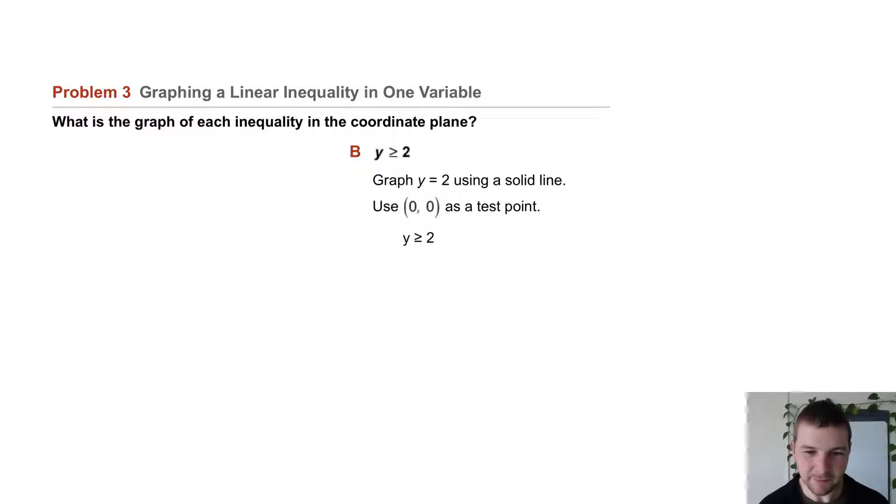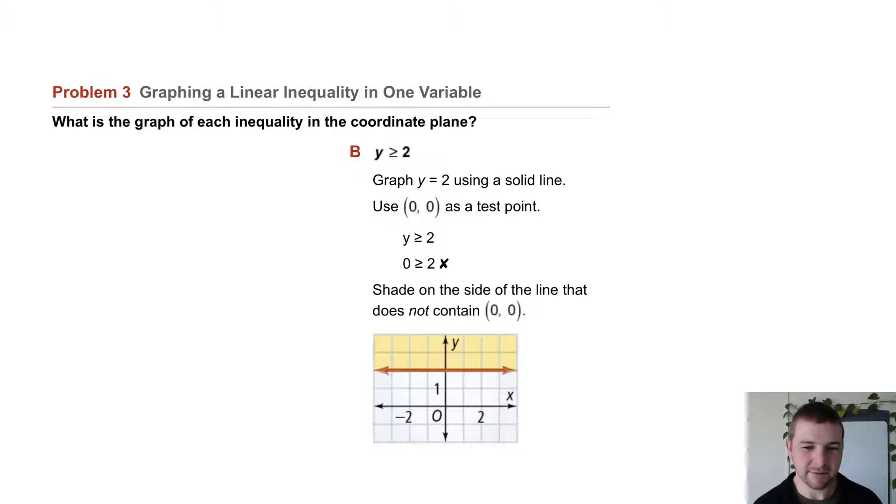Plugging in 0, we find 0 greater than or equal to 2 is not true, so the origin will not be included in our solution set, meaning we must shade on the other side of the boundary line, which is above it.